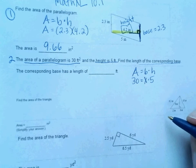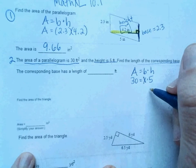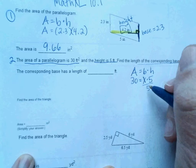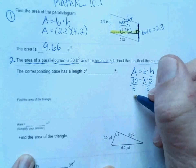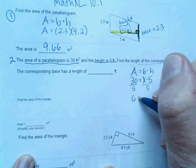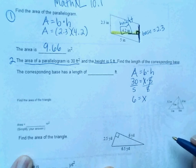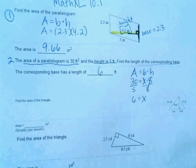You could put this on Desmos if you needed to, or you just know, divide by 5 on each side. 30 divided by 5 is 6. So 6 is equal to X. So the length is going to be 6 feet.